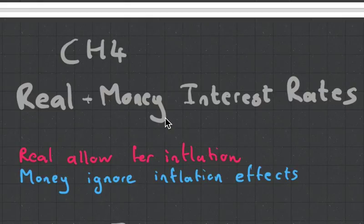Hey guys, it's MJ, the student actuary, and this is a very quick chapter. It's chapter 4 of CT1, and it's on real and money interest rates. The basic idea is that real interest rates allow for inflation, and monetary interest rates ignore the inflation effects.